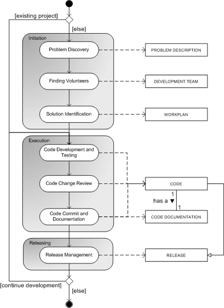In closed-source software development, the programmers are often spending a lot of time dealing with and creating bug reports, as well as handling feature requests. This time is spent on creating and prioritizing further development plans, leading to part of the development team spending a lot of time on these issues and not on the actual development.